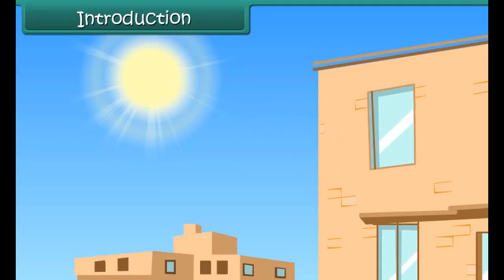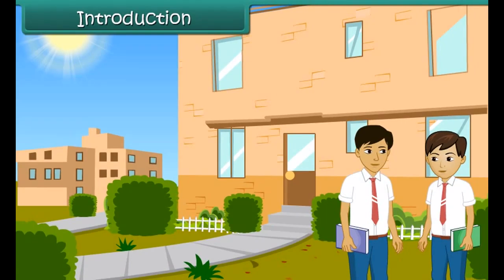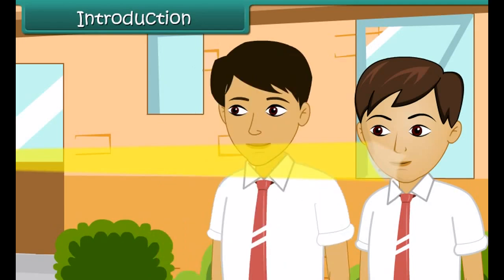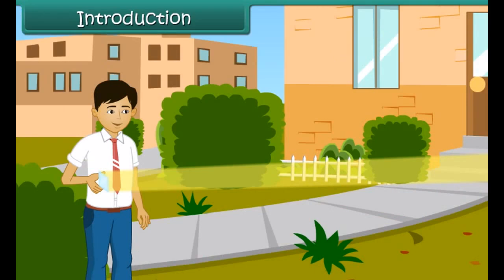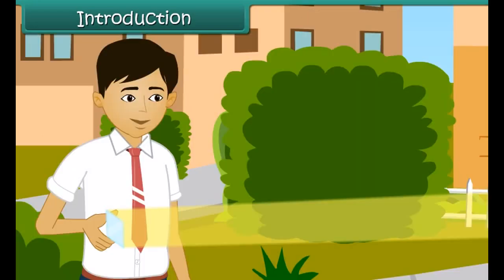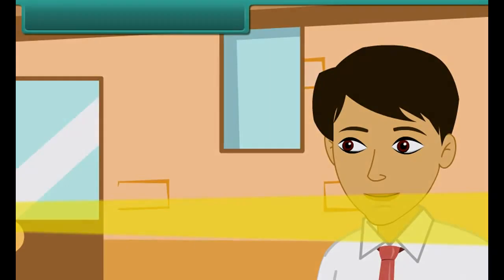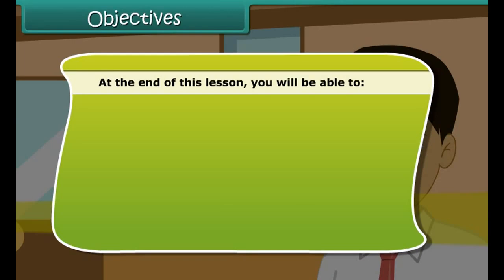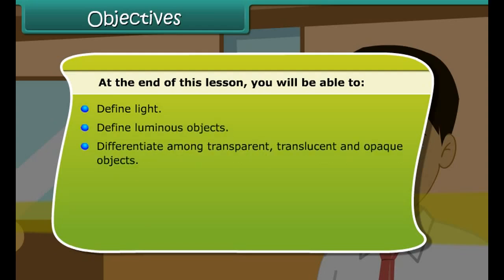It is recess time at school. You and your friends are out in the lawns when suddenly a bright light hits you in the eye. You move to a different location, but this time the bright light hits your friend. The bright light seems to be following you. You look around and see Aman standing at a distance with a mirror in his hand. You know Aman was responsible for this mischief, but how he managed it you are not sure. In this lesson we will discuss light, shadows, and reflection in detail.